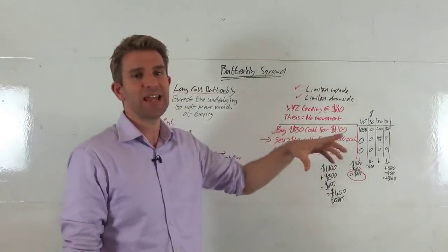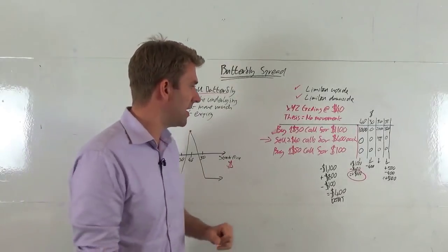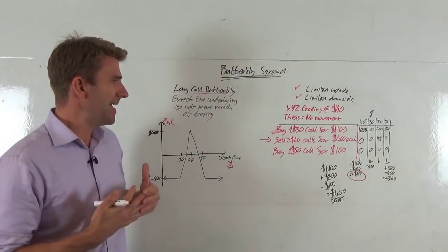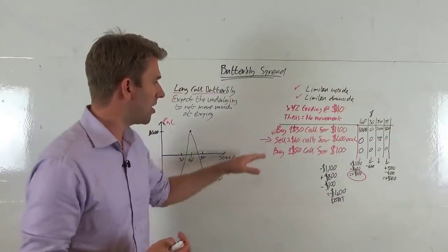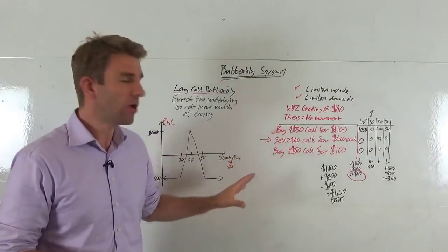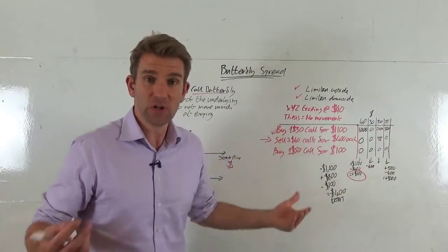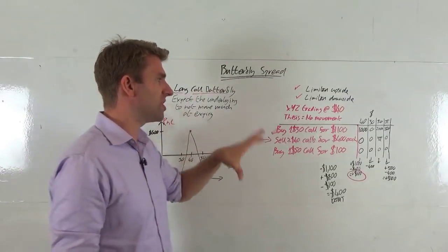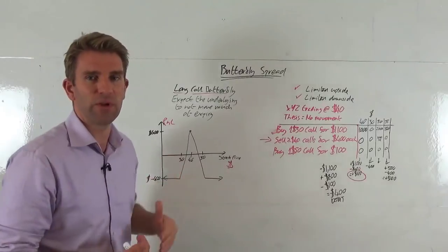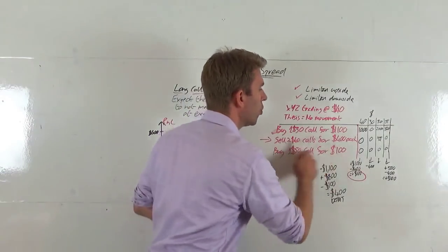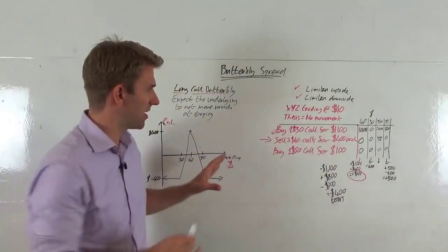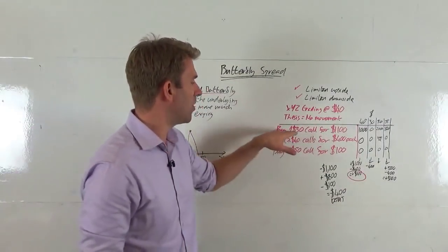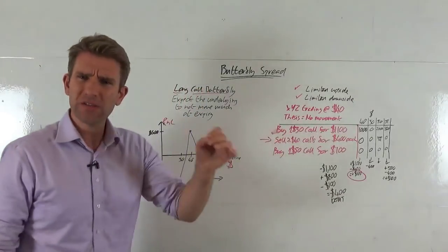To construct this spread properly and cap our risk — because if the stock went to zero that's great, we make all that money, but if it goes off into the stratosphere we're stuck short these calls and on the hook for a big loss — we reduce the risk a little bit, though we also reduce potential profit. That's the core of it. We're selling the calls and then adding extra legs to the spread. So we now buy one $30 call for $1,100.